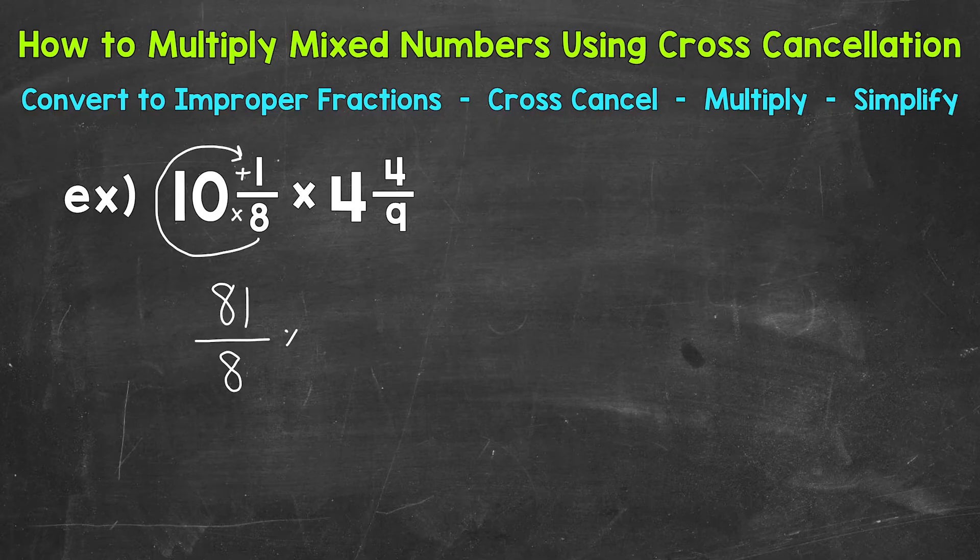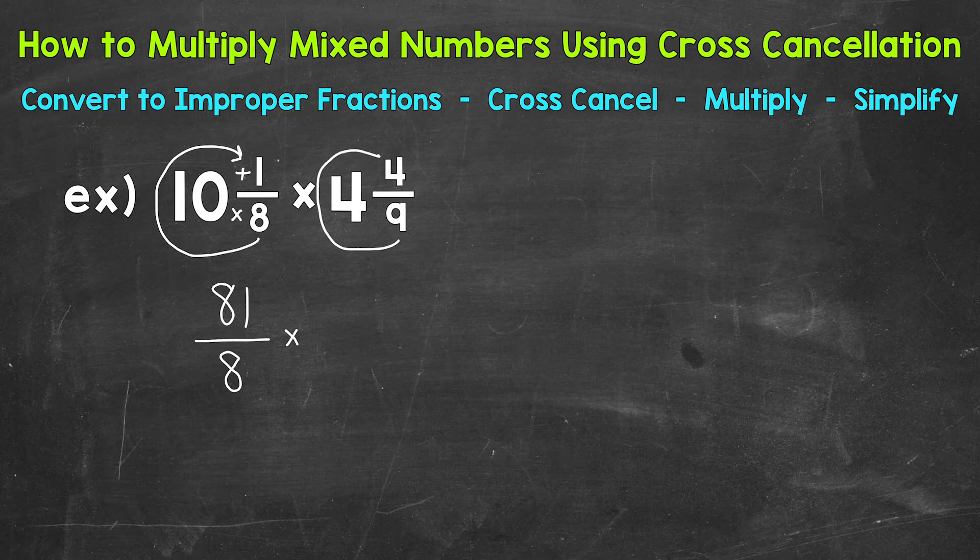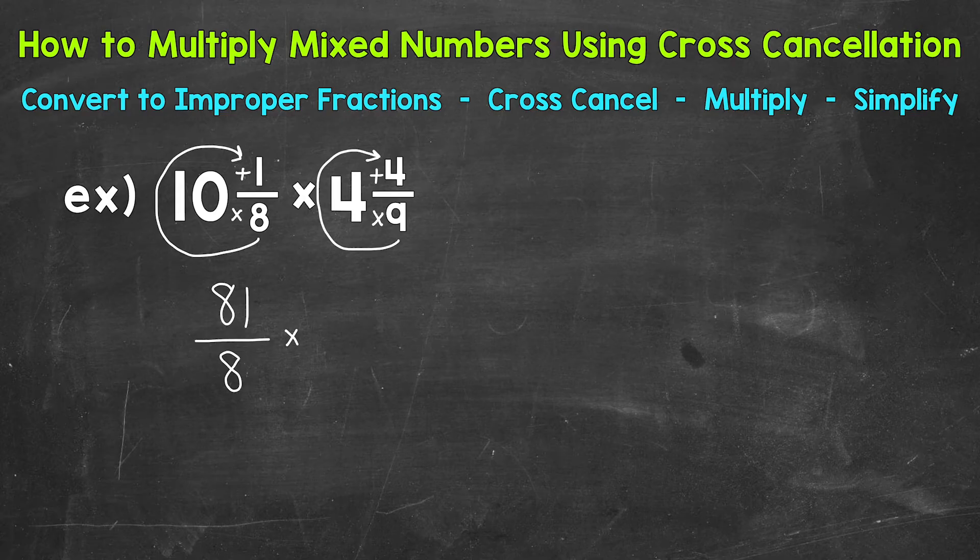We'll bring our multiplication sign down and then convert our second mixed number. Start at the bottom. We multiply and then add. So 9 times 4 is 36 plus 4 is 40. So that's our numerator and we keep our denominator of 9 the same.